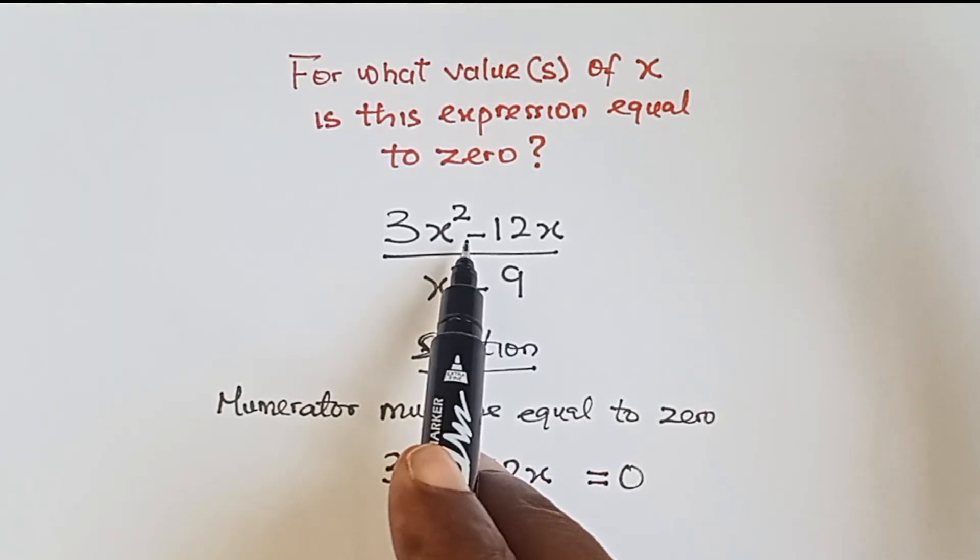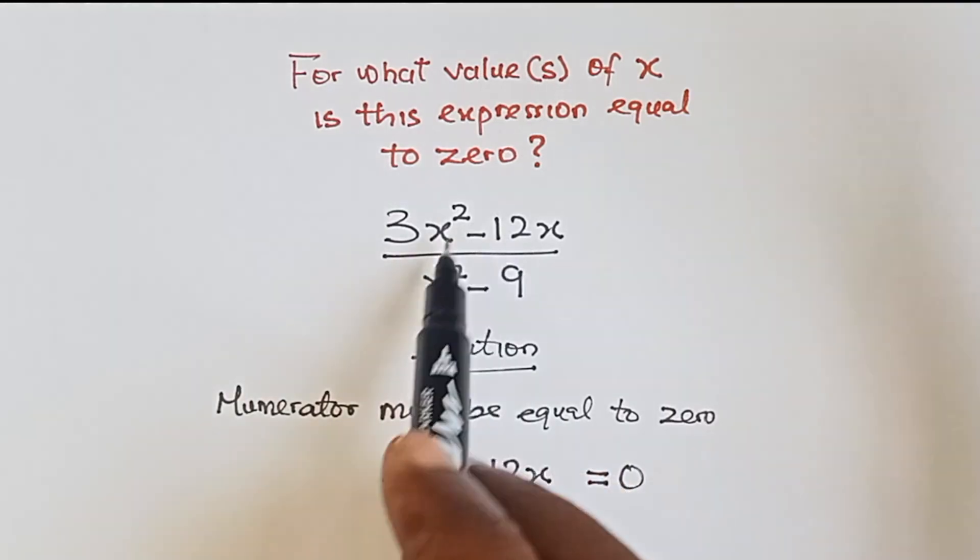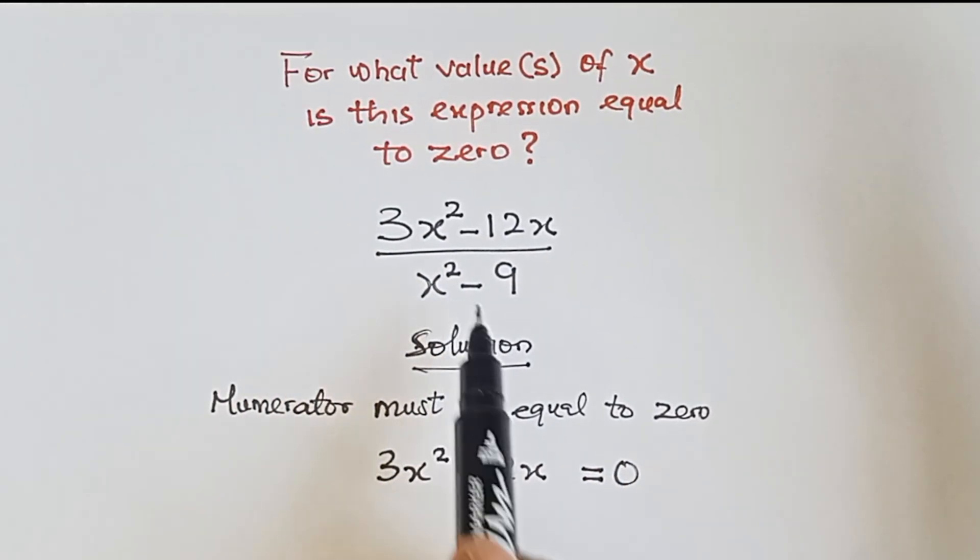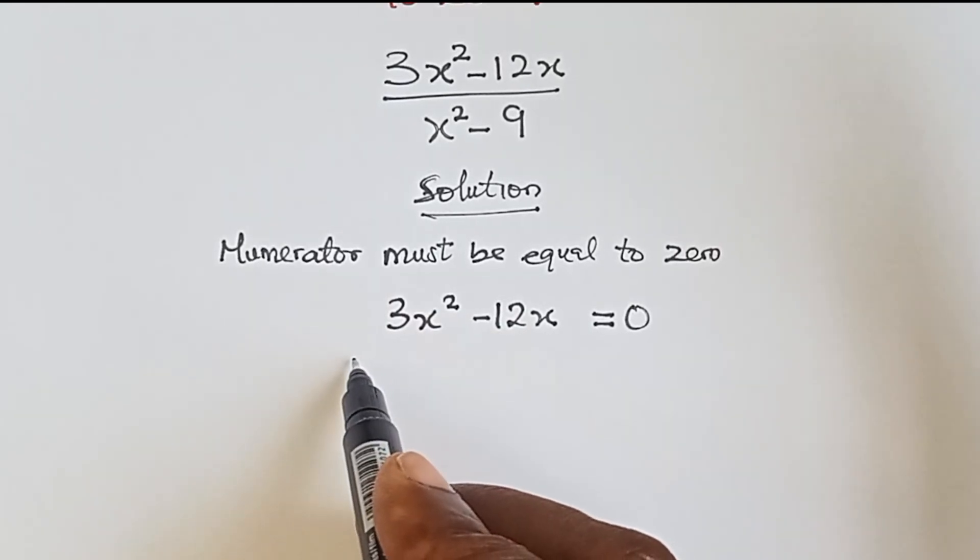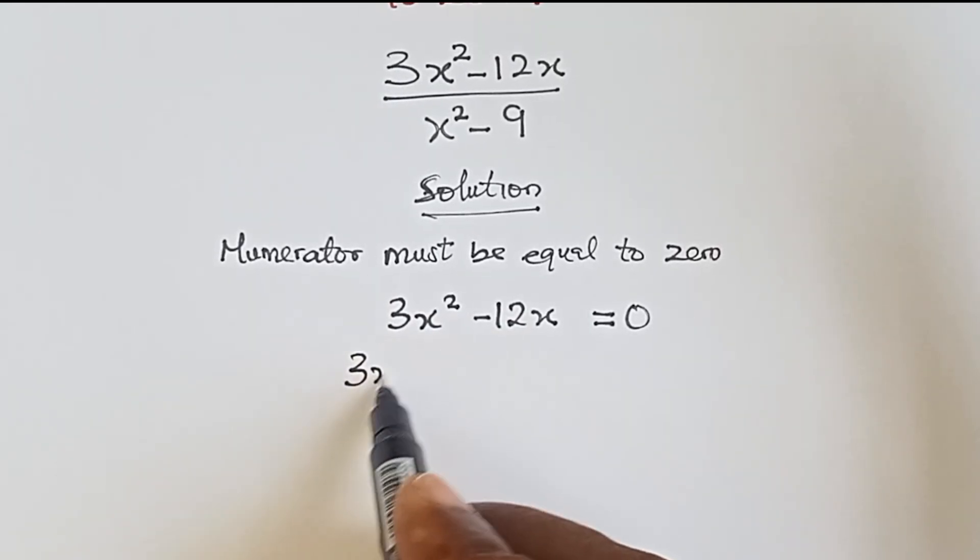Once our numerator is equal to zero, then the whole expression is also equals to zero. Right, so now what do we do? To factorize this, we have 3x is common.